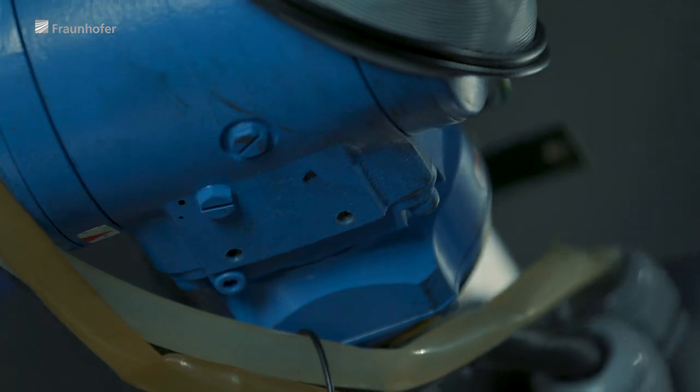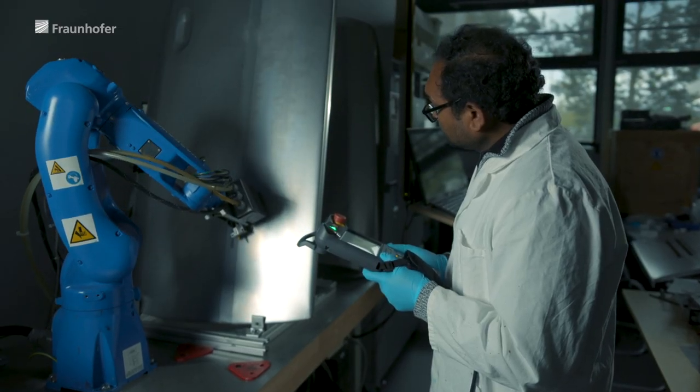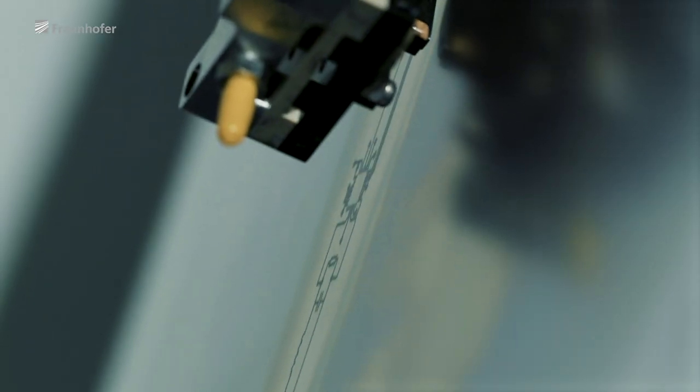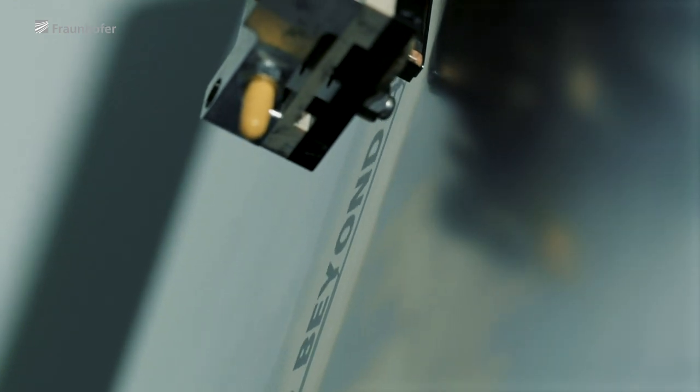The robot-guided inkjet printing process developed at Fraunhofer ILT allows even finer conductor paths with a minimum width of 50 micrometers to be printed. This enables the efficient production of a large number of parallel conductive tracks.